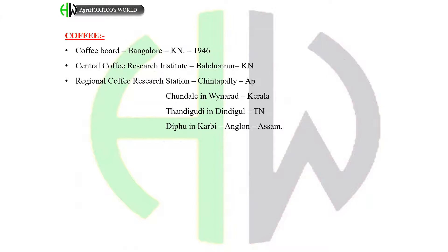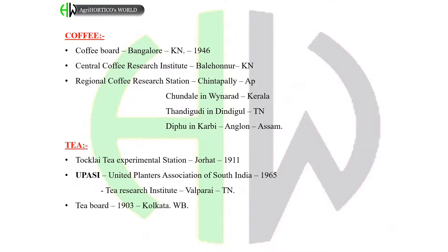Regional Coffee Research Station at Handigodu in Dindigul, Tamil Nadu; Diphlu in Karbi Anglong, Assam. Tea: Tocklai Tea Experimental Station at Jorhat in 1911. UPASI — United Planters' Association of South India in 1965. Tea Research Institute at Valparai, Tamil Nadu. Tea Board in 1903 at Kolkata, West Bengal.